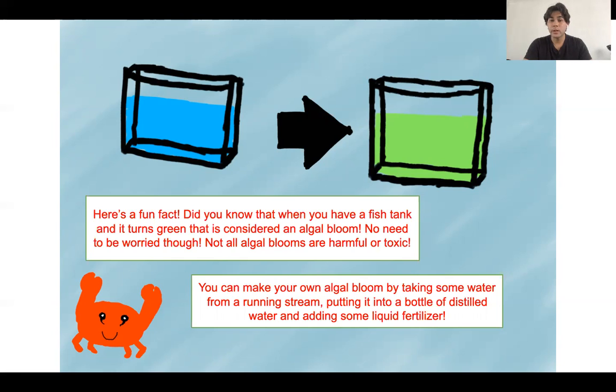And if you want to make your own, because you thought it was pretty cool what we talked about today, you can make your own algal bloom by taking some water out of a stream, putting it into a bottle of distilled water and just adding some liquid fertilizer. It's actually a really cool way of observing these types of things.